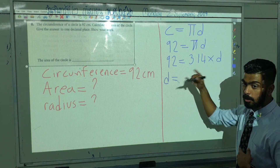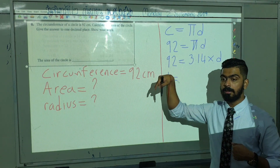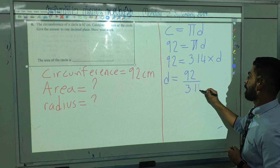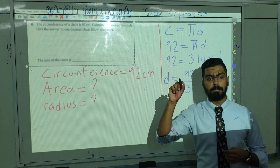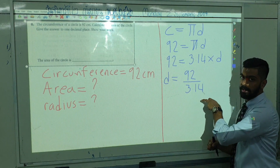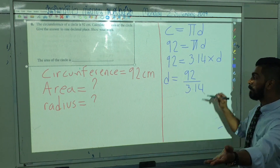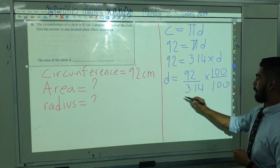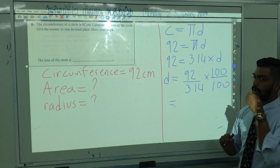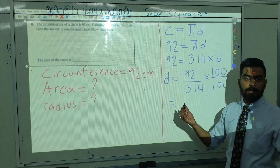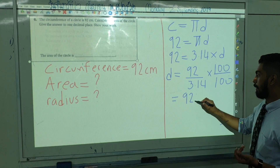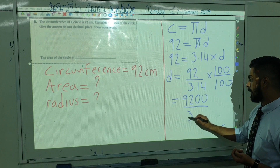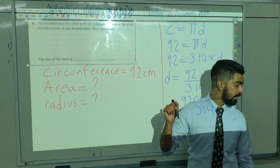We move 3.14 to the other side, so it becomes 92 divided by 3.14. Now, since we have a decimal in the denominator, we multiply by 100 over 100. So that gives us 9200 over 314.